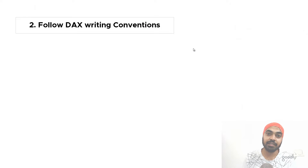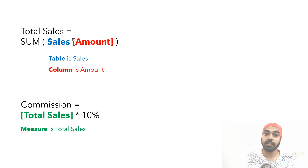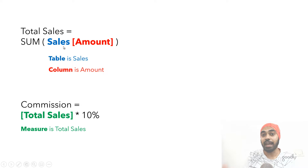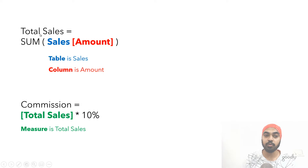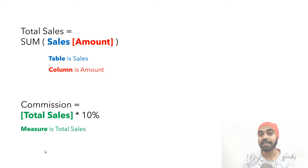The second one is not following DAX writing conventions. Whenever you are trying to refer to a particular column, you always precede that column with the name of the table it's coming from. For example, if I'm doing a SUM of the amount column from the sales table, I write the table name first. However, when referring to a measure directly — like multiplying total sales by 10% for commission — you write the measure without the table name.